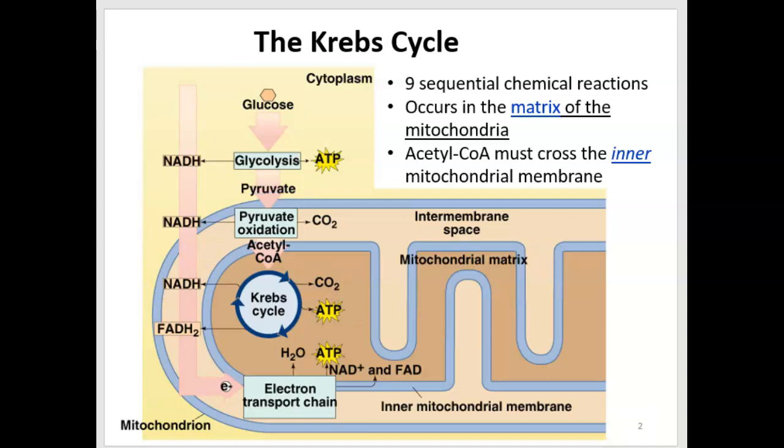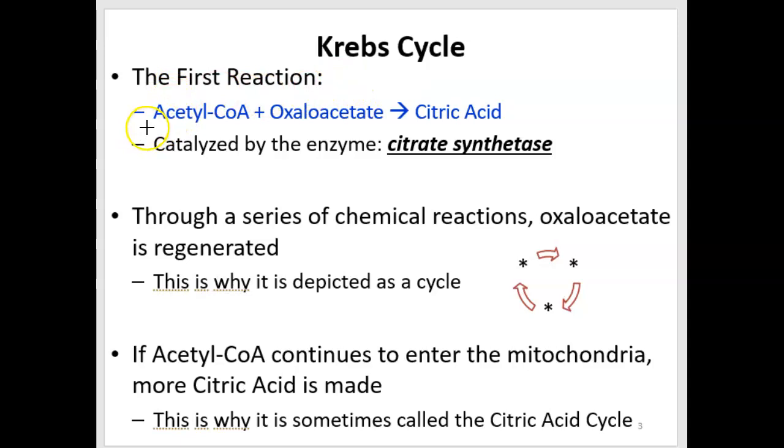So first, the first reaction of the nine takes the acetyl-CoA that has entered the matrix and combines it with a four-carbon compound called oxaloacetate. If you recall, acetyl-CoA had two carbons. So the product of this reaction, citric acid, has six carbons.